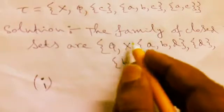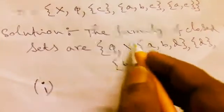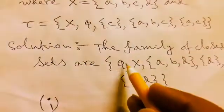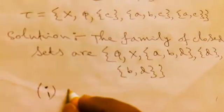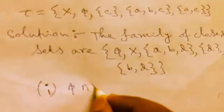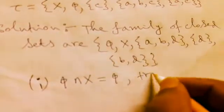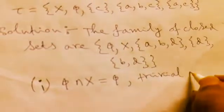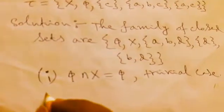At first, we check the trivially true cases, where any member with X or φ will give φ or that member. φ intersection X must be φ, which is trivially true. So it is a trivial case, but here we consider non-trivial cases.